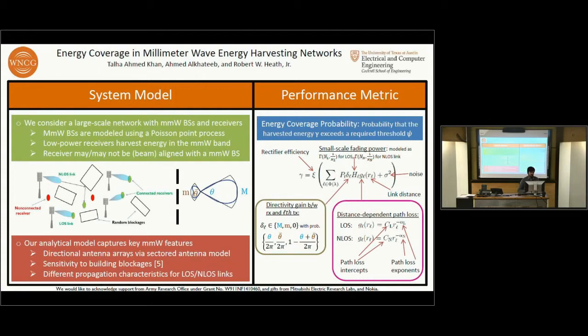As mentioned before, we capture the sensitivity to building blockages using another Poisson Point process for the buildings. We assume different propagation characteristics for the line-of-sight and non-line-of-sight links, which is supported by empirical evidence.